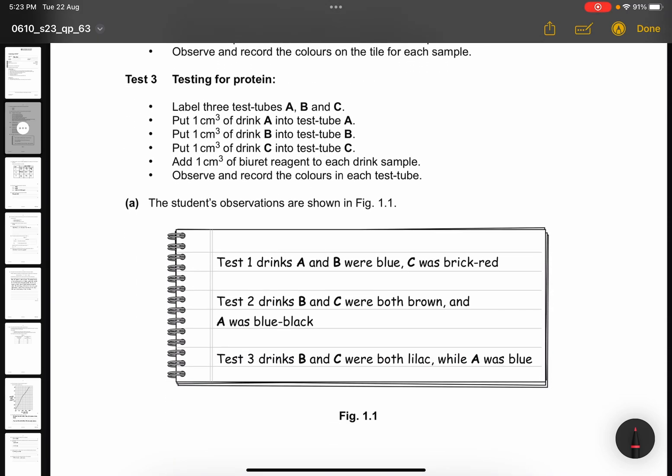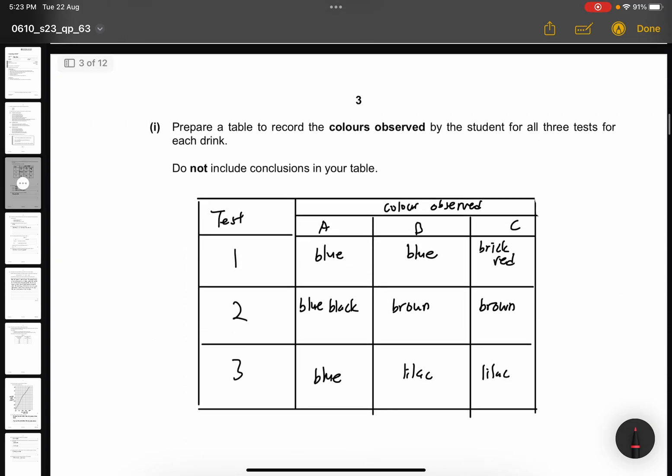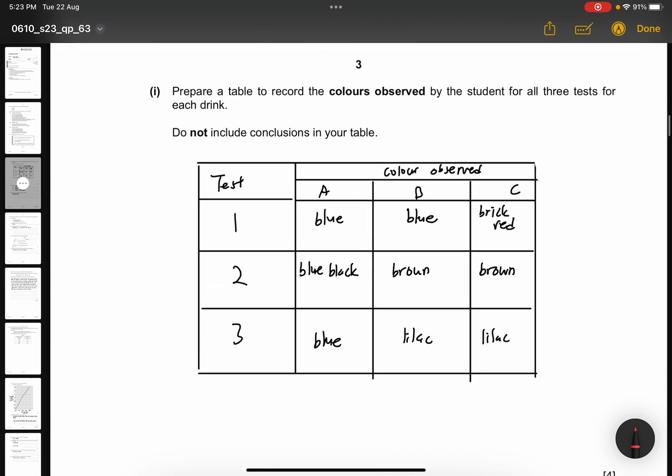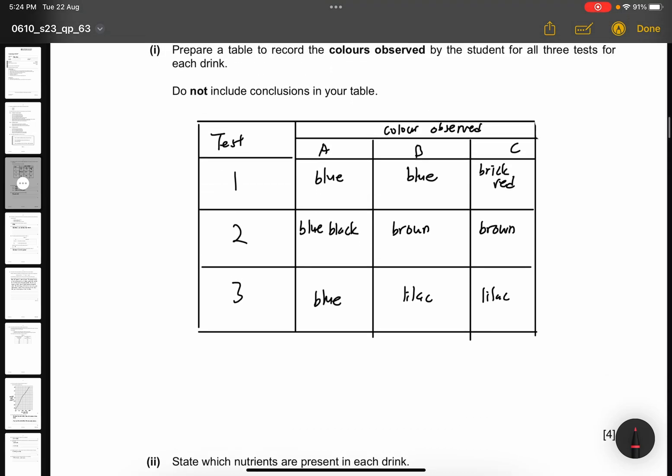Part A. The student observations are shown in figure 1.1. Test 1, drinks A and B were blue, C was brick red. Test 2, drinks B and C were both brown and A was blue-black. Test 3, drinks B and C were both lilac while A was blue. Part 1 says, prepare a table to record the colors observed by the student for all 3 tests for each drink. Do not include conclusions in your table. This is just roughly the table that I've drawn. You might have a different one as long as all of the recorded data is inside and a proper table will be acceptable as 4 marks.